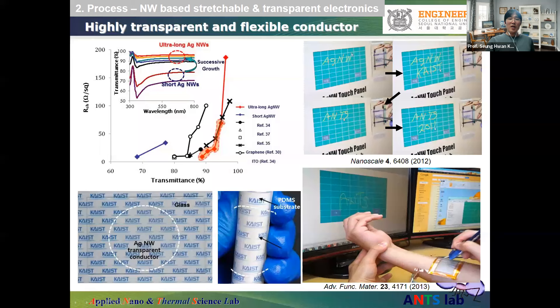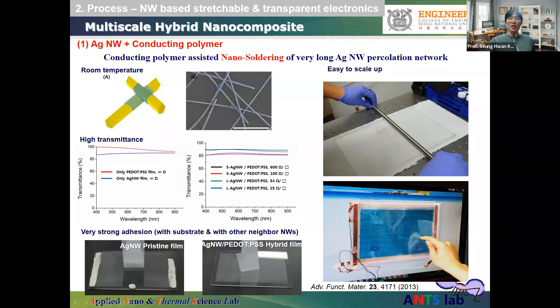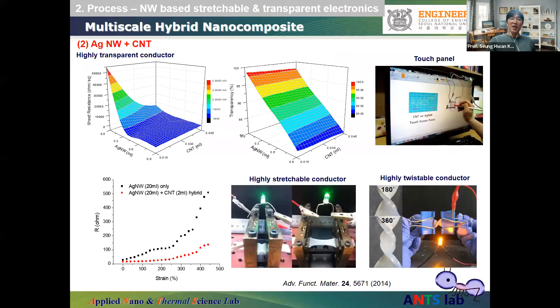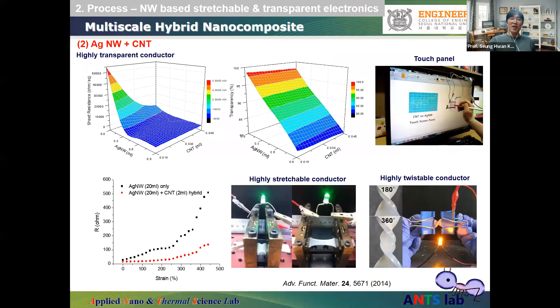Based on the ultra-long silver nanowire synthesis and the low-temperature selective nanowelding process, the first highly flexible and transparent conductor was produced — even better than graphene, which at that time held the world record for transparent conductors. By adding functional nanomaterials such as conducting polymer or a small amount of carbon nanotubes to the silver nanowire backbone network, a highly transparent and highly stretchable conductor was developed.